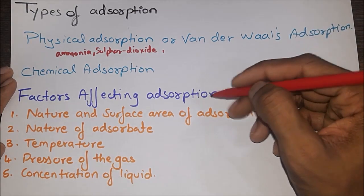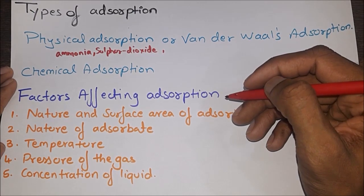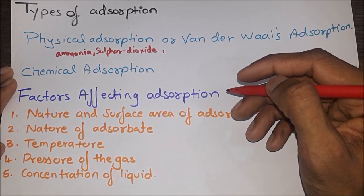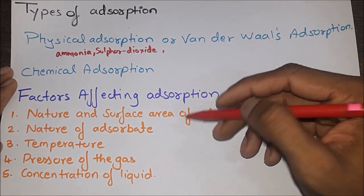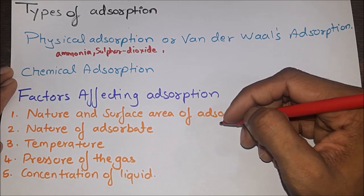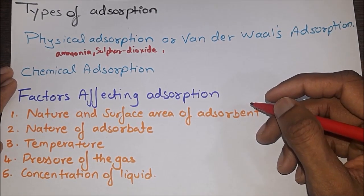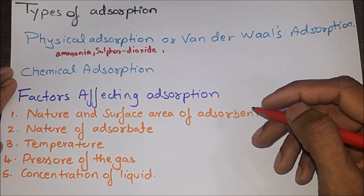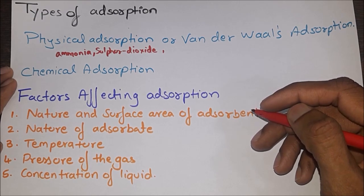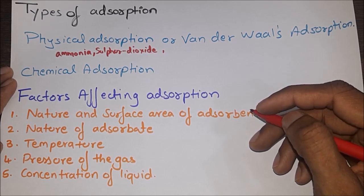Factors affecting adsorption: The phenomenon of adsorption of gaseous or liquid adsorbate on a solid adsorbent depends on the following factors. First, nature and surface area of adsorbent — applicable for both liquid and gaseous adsorbates. Since adsorption is a surface phenomenon, the rate of adsorption is directly proportional to the surface area of the adsorbent. Larger the surface area and rougher the surface of adsorbent, more is the adsorption.